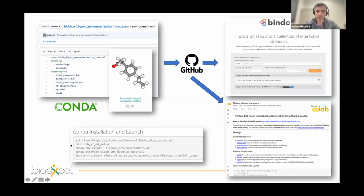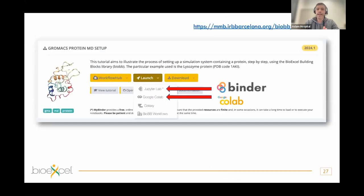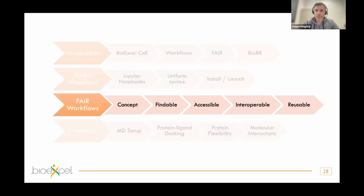You can find direct links to Jupyter Lab in Binder and to Google Colab on our landing page in the BioBB website. Now that you know about the library, uniformity, Jupyter Notebooks, and Conda environments for reproduction, I'm going to try to convince you about how FAIR our workflows are.